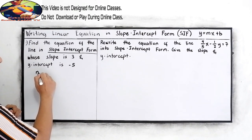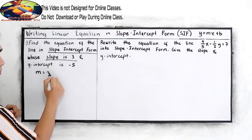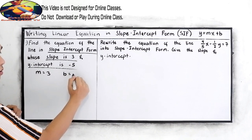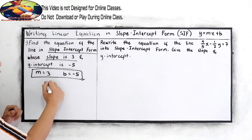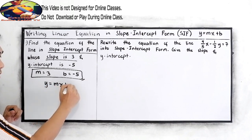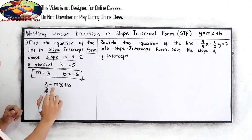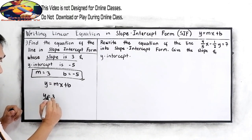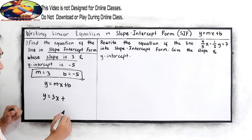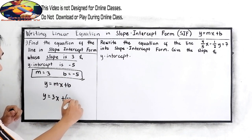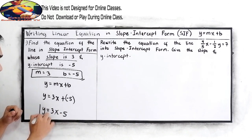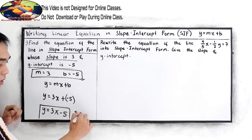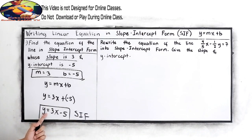Write the given: our m, or the slope, is 3, and the y-intercept, b, is equal to negative 5. We have the equation y is equal to mx plus b. Now just substitute the given. So y is equal to 3x plus b, where b is negative 5. So y is equal to 3x minus 5. This will be our slope-intercept form.